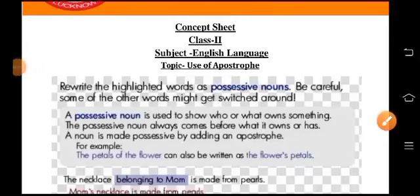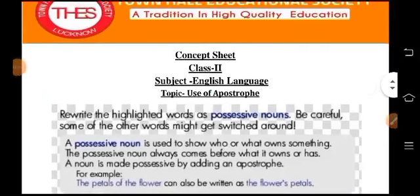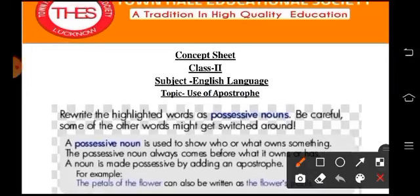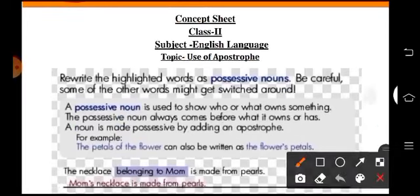Hi children, welcome again in English language class. So again we'll solve today's English language concept sheet and the topic is use of apostrophe. I told you about the apostrophe, we write here comma and we write s. It doesn't represent the plural form but it is a singular form and it shows the possession. So here, rewrite the highlighted words as possessive nouns. Be careful, some of the other words might get switched around.